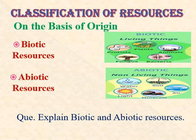Classification of resources. On the basis of origin, resources are classified into two types: biotic resources and abiotic resources. Biotic resources are obtained from the biosphere, that means all living things — for example human beings, plants, and animals. Abiotic resources are composed of non-living things — for example soil, rocks, metals, winds, etc.